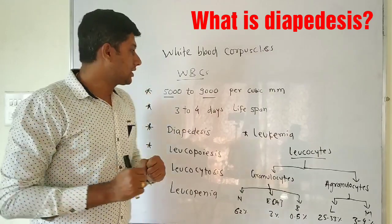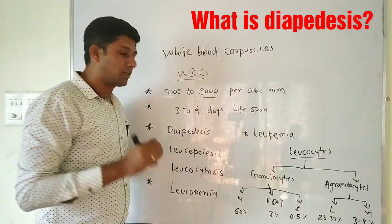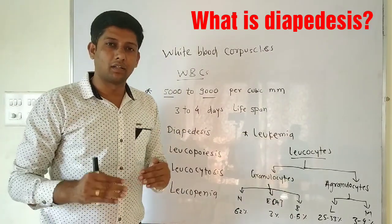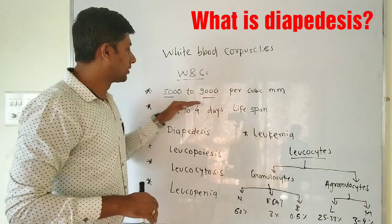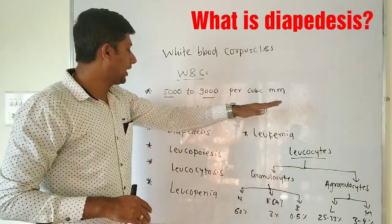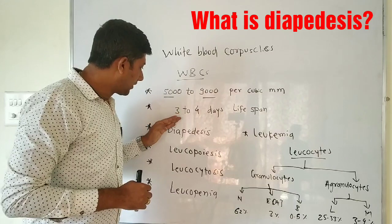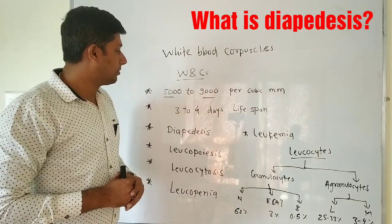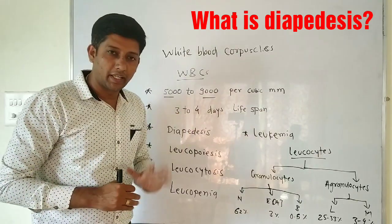The normal total WBC count in a human body is 5,000 to 9,000 per cubic mm. The average lifespan of WBCs is 3 to 4 days.